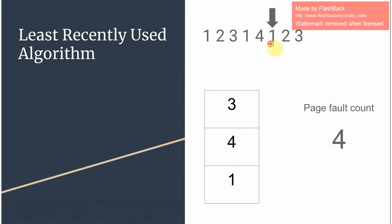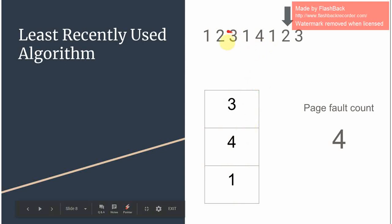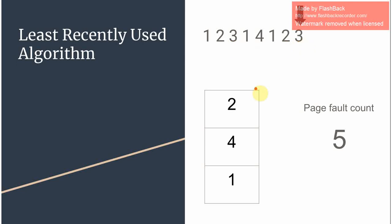Then we move on to 2. Since 2 is not present we decide what to replace it with. Amongst 1, 4, and 3, since 3 is the least recently used, we replace 3 with 2. In the end we have 3, and we need to decide which is least recently used between 2, 4, and 1. Since 4 is the least recently used, we replace it with 3.